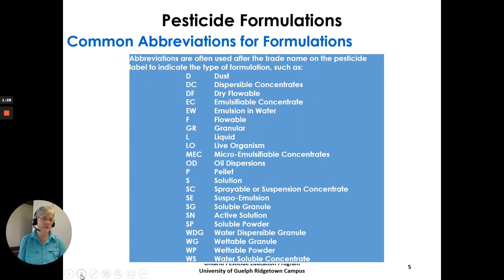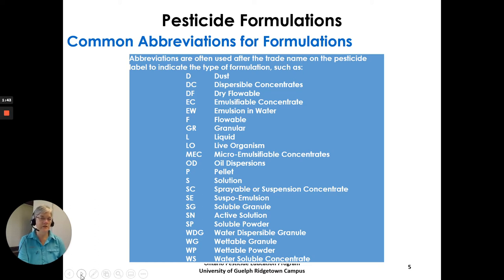Common abbreviations for formulations — here is a list of them. Some are used next to a product name. For example, if you have a product called Pest Manager EC, that would be a Pest Manager emulsifiable concentrate. The trade name on the label gives an indication of what kind of material you're actually dealing with when you buy that product.